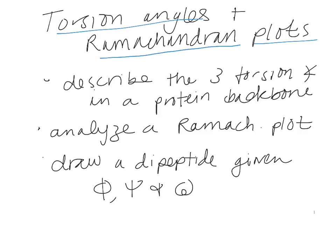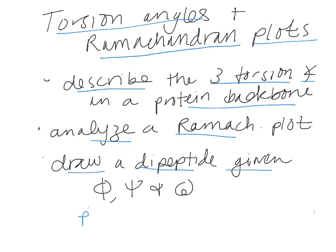After watching this video, you should be able to describe the three torsion angles — that's my symbol for angles — in a protein backbone. We're not talking about side chains at all. You should be able to analyze a Ramachandran plot and draw a dipeptide given this is Phi, this is Psi, and this is Omega.